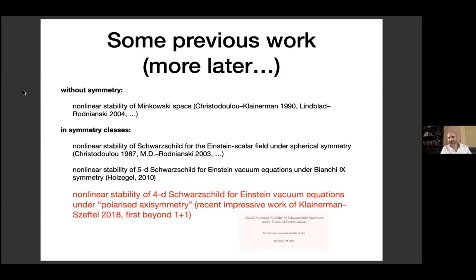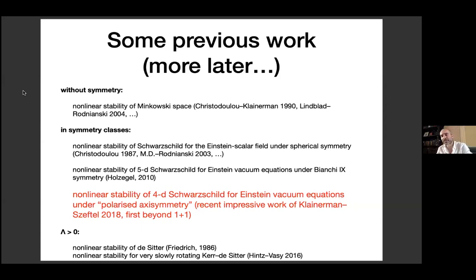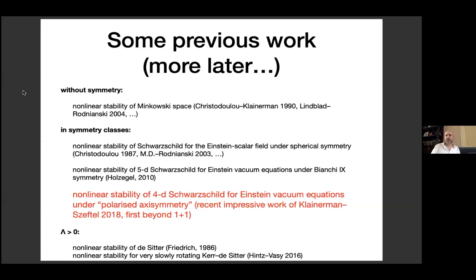One can also put a cosmological constant on the right-hand side of the Einstein equations. In the positive case, Minkowski space is replaced by de Sitter space and Kerr has a cousin called Kerr–de Sitter. The nonlinear stability of de Sitter was proven by Friedrich in the 1980s, and remarkably, the nonlinear stability of very slowly rotating Kerr–de Sitter was proven by Hintz and Vasy.